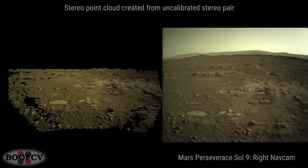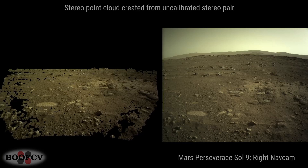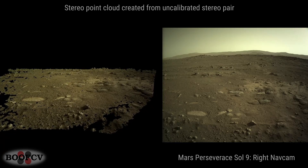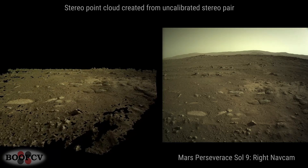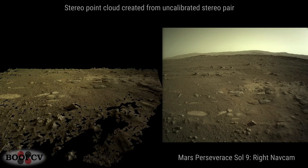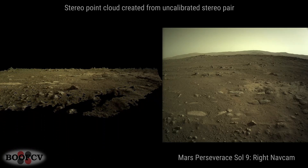On the left, a 3D point cloud is shown that was created using a stereo nav cam on Perseverance Rover from Sol 9 of its Mars mission. I'm showing one of the two source images on the right.